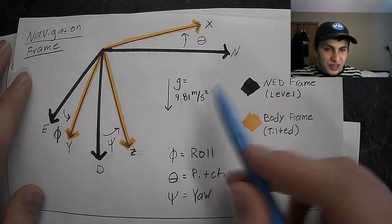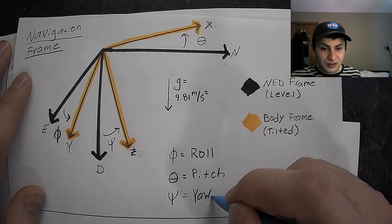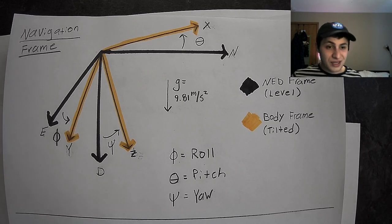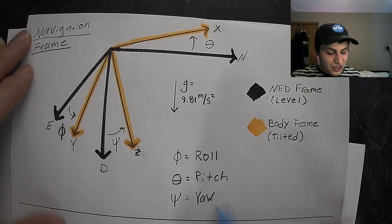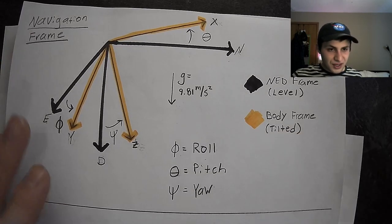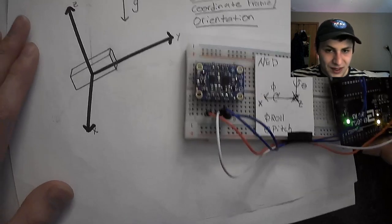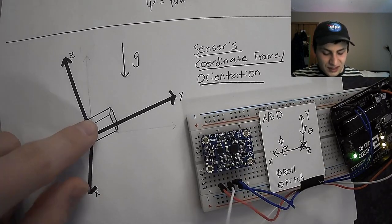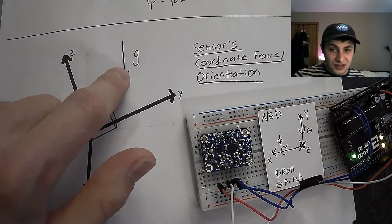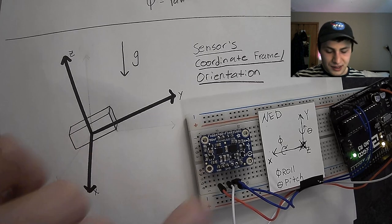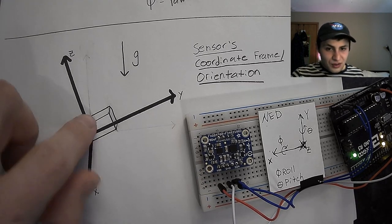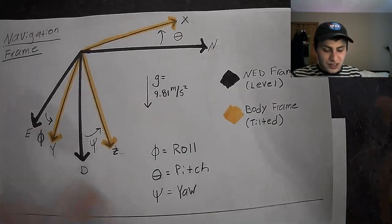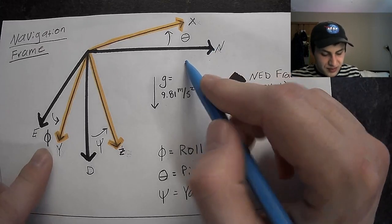We cannot use an accelerometer to measure yaw angle, because gravity is the same no matter which direction we're pointing. So we can only use an accelerometer to measure roll and pitch. Also, our accelerometer's coordinate frame has its z-axis in the opposite direction of gravity — that's the case with my accelerometer here. But even so, the equations I'm going to show you still compute roll and pitch with respect to the North-East-Down frame.